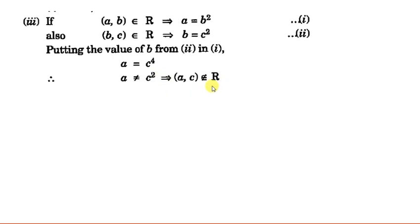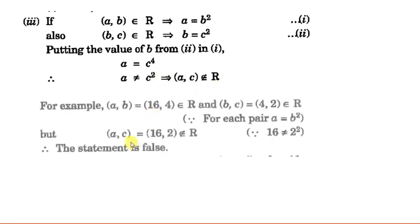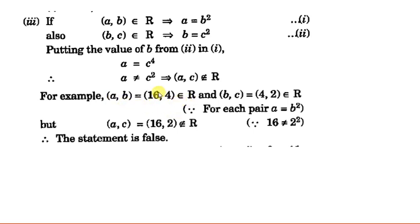Let's see this with an example. For example, (16,4) belongs to R because 16 = 4². (4,2) also belongs to R because 4 = 2². But (16,2) will not belong to R because 16 is not equal to 2². That is, (a,b) belongs to R, (b,c) belongs to R, but (a,c) does not belong to R. So this statement is also false.